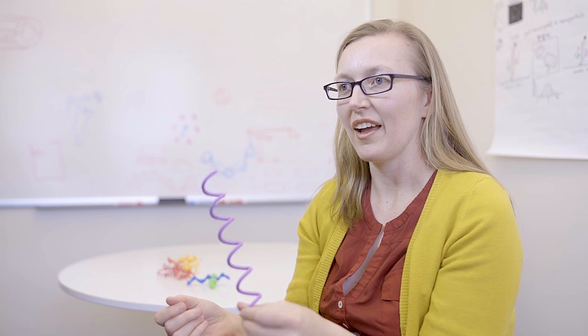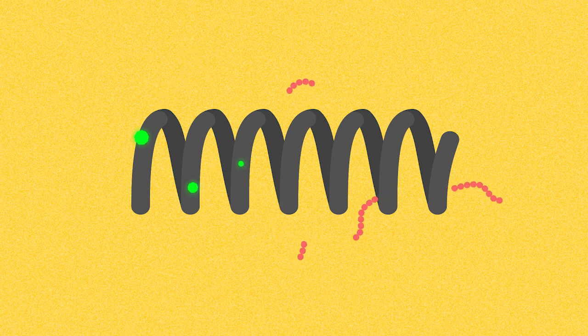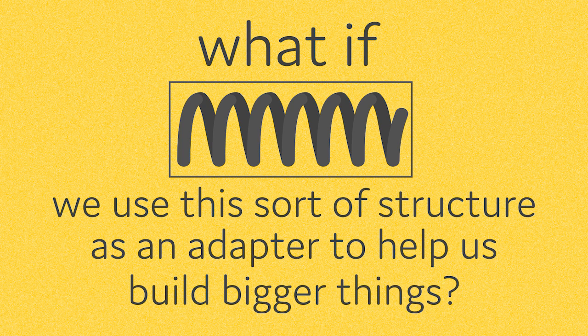The third part of what we do spans the micro and nanoscale. We're interested in organizing DNA to make nanostructures and decorating them any way we want—with proteins, molecules that fluoresce, or metal ions. What if we use this structure as an adapter to help us build bigger things?